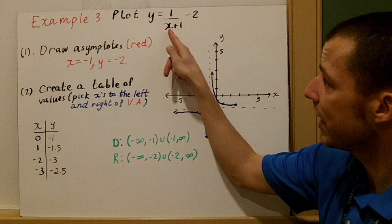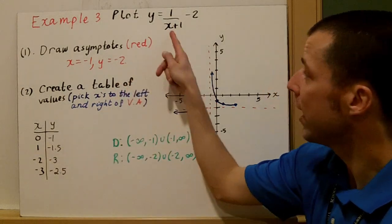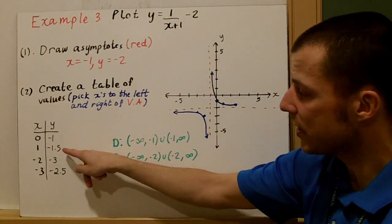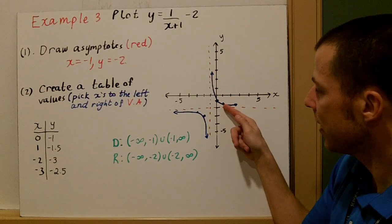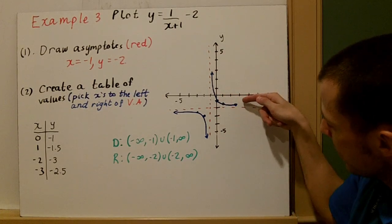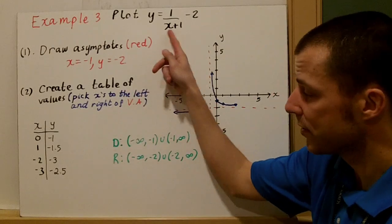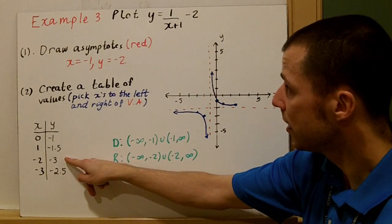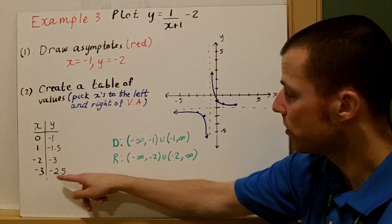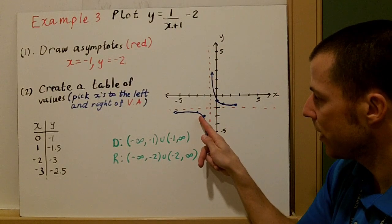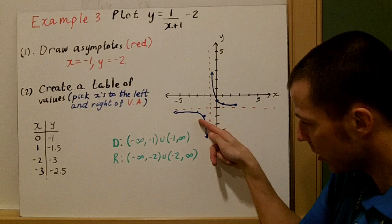When I plug 0 in for x, I get 1 minus 2, which is negative 1. When I plug in 1, I get one-half minus 2, which is negative 1.5. So my points are (0, negative 1) and (1, negative 1.5), and I follow the asymptote. Plugging in negative 2 gives y equals negative 3, and plugging in negative 3 gives y equals negative 2.5. Those points are here, and again I follow my asymptotes to draw both branches.